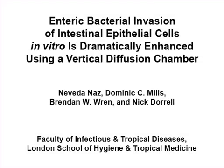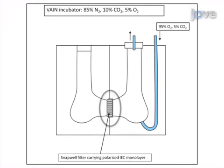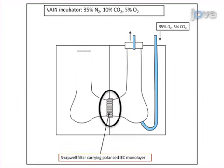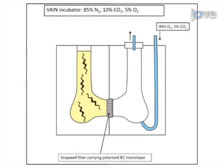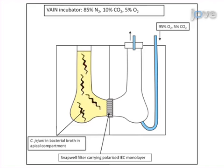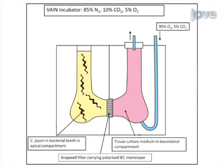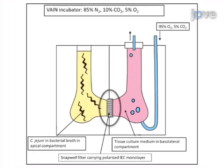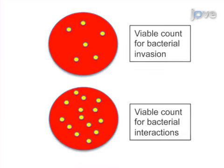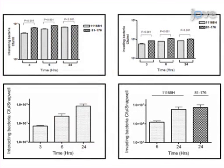The overall goal of this experiment is to use the Vertical Diffusion Chamber (VDC) model to investigate bacterial interactions with and invasion of intestinal epithelial cells. This is achieved first by using a special filter seeded with a polarized monolayer of Caco-2 intestinal epithelial cells to create separate apical and basolateral compartments in the VDC. The bacterial inoculum of interest is then added to the apical compartment under microaerobic conditions, and cell culture medium is added to the basolateral compartment under aerobic conditions. At desired time points during the co-culture, the filter is removed and the numbers of interacting or intracellular bacteria are enumerated.